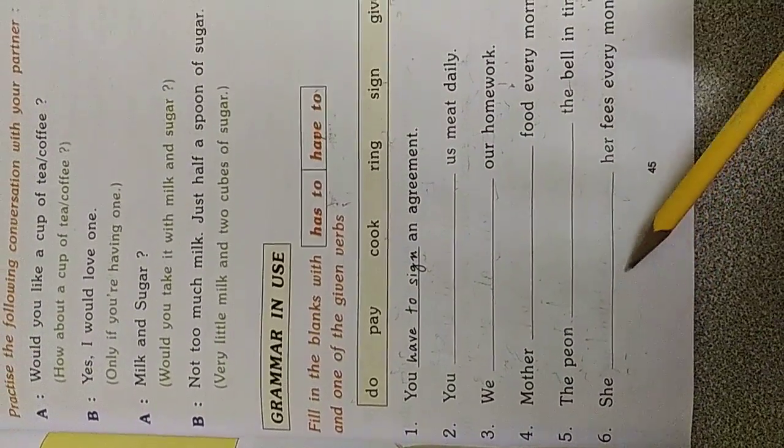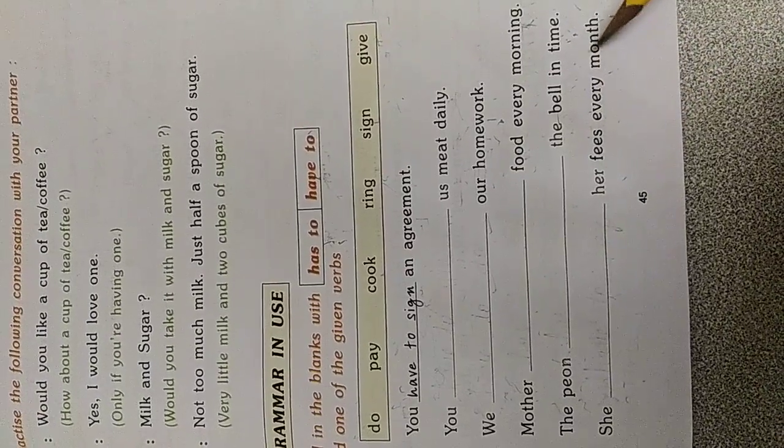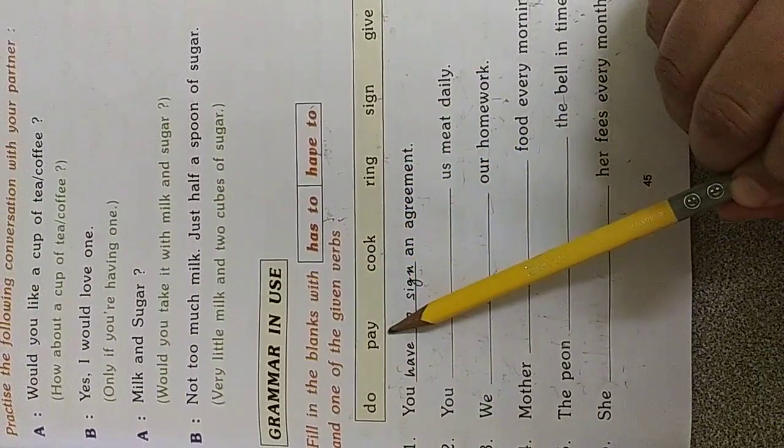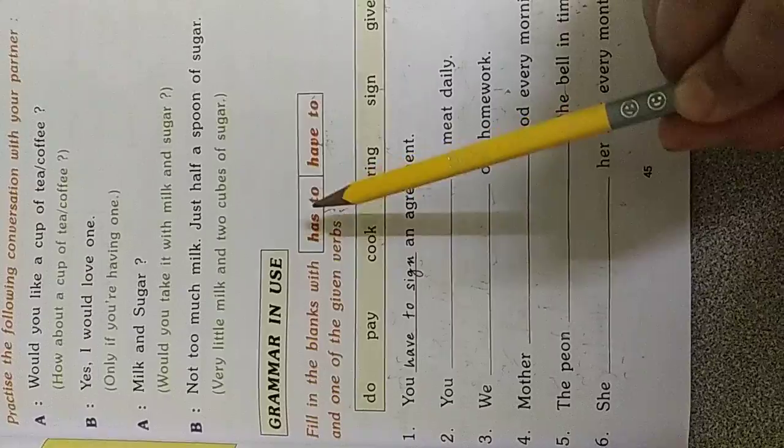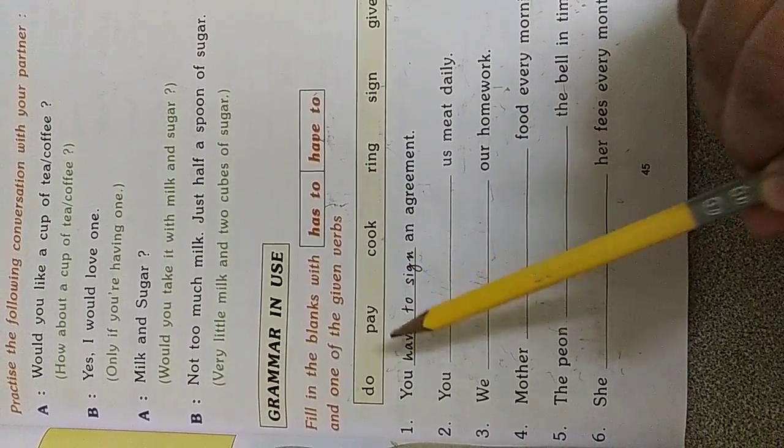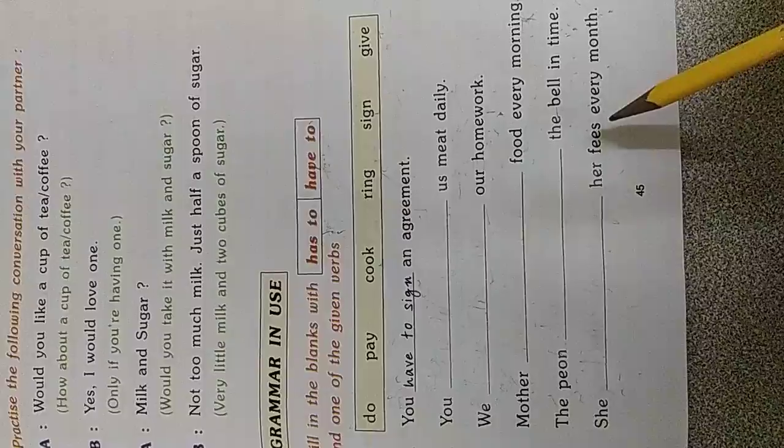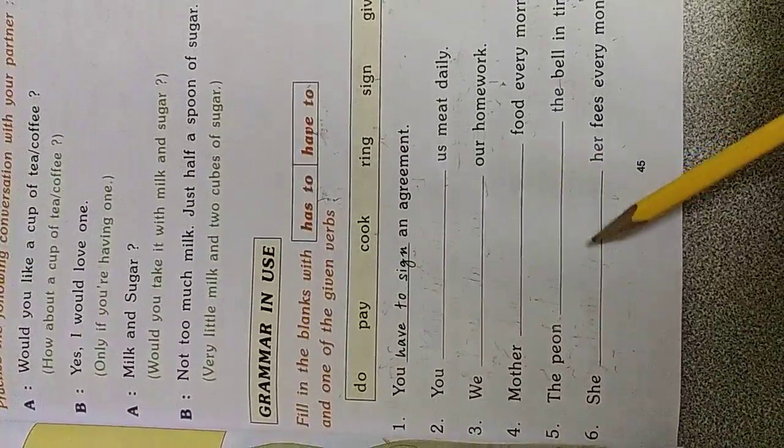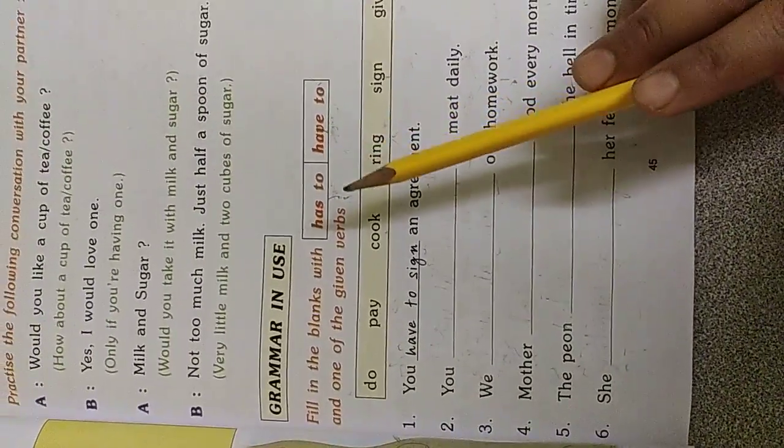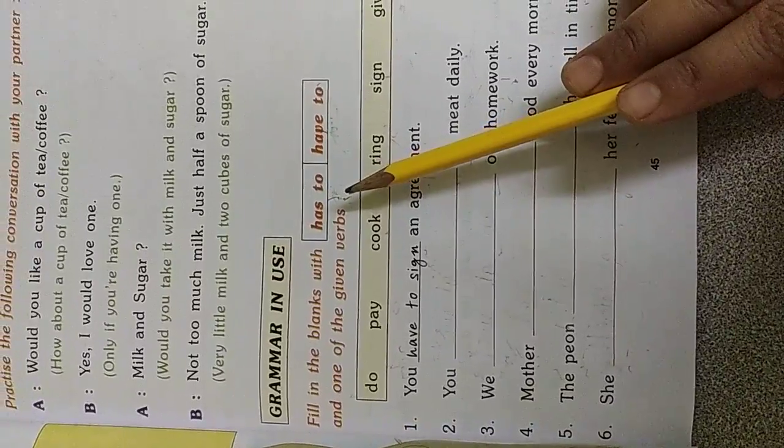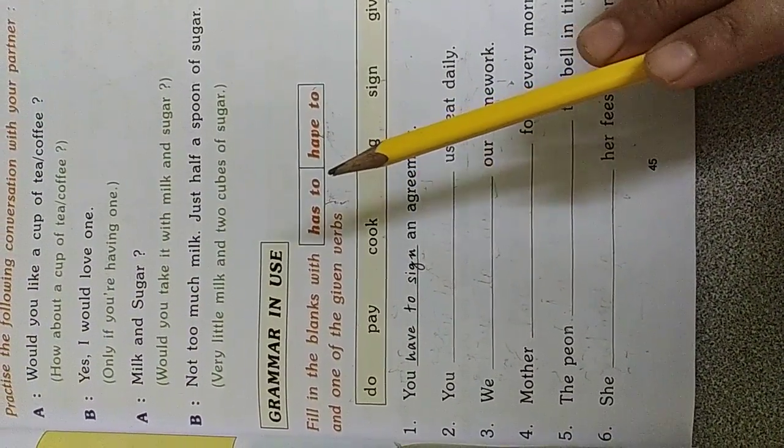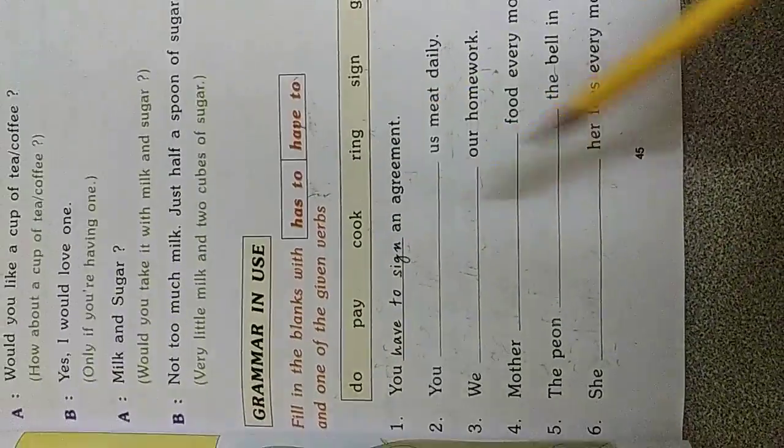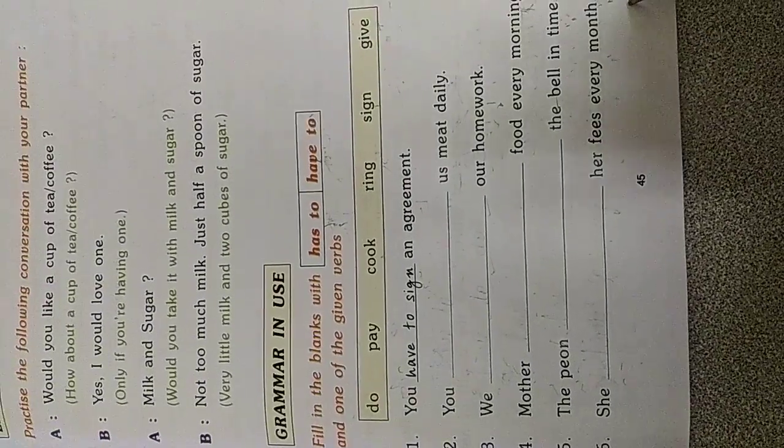She dash her fees every month. She has to pay. She has to pay her fees every month. So, even she doesn't have any other option. She has to. If she is learning in a school, if she is studying in a school, she has to. If she is studying in a tuition, she has to pay her fees every month.